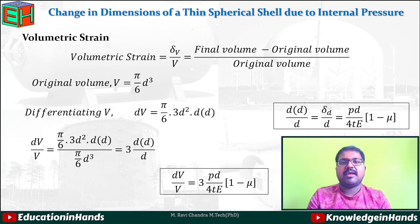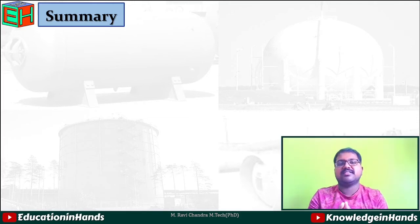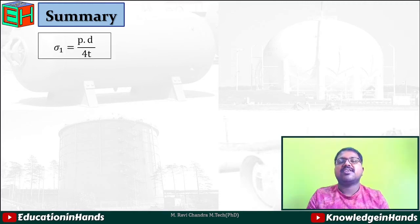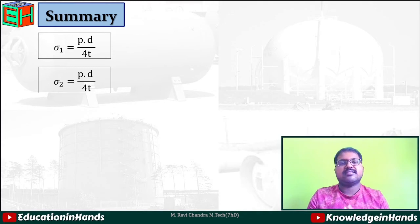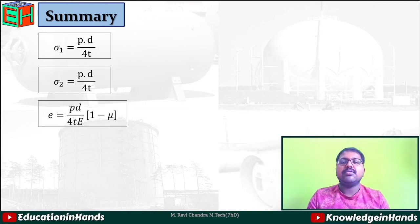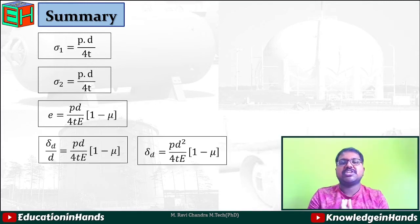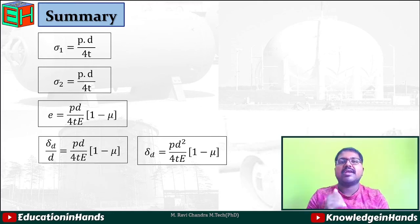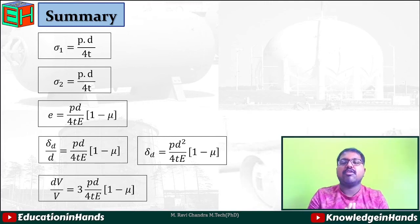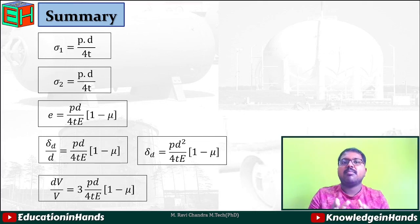In summary, for thin spherical shells: the circumferential stress and longitudinal stress are both equal to σ = pd/4t in any direction. The strain in any direction is (pd/4tE)(1 − μ). The change in diameter is δd = pd²/4tE × (1 − μ). The volumetric strain is δV/V = 3pd/4tE × (1 − μ). These are the important formulas regarding thin spherical shells.